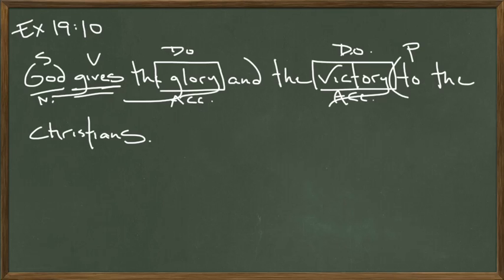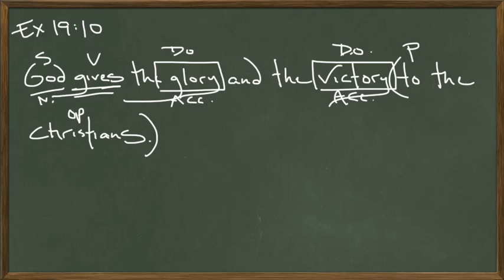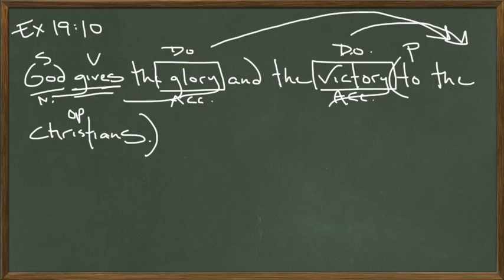'To' is a preposition — it sets off a prepositional phrase. The prepositional phrase is 'to the Christians.' 'Christians' is the object of the preposition. Now, what case does this go into in Latin? We can answer that with a couple of clues. If you see 'give,' it's probably going into the dative case in Latin, and also if you have someone receiving the direct objects. Who's getting the victory, and who's getting the glory? The Christians are. Mr. Henley was a Catholic priest, I've heard, so there are a lot of sentences like this in his book.